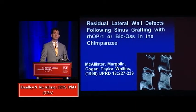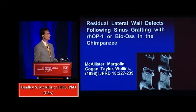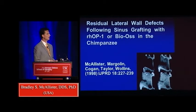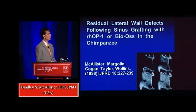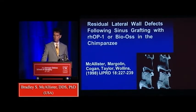One of the things we learned early on with the use of some of the bone morphogenetic proteins is that you did have to recruit the cells, and so the cells would be coming from the lateral wall. This shows a sinus augmentation and you can appreciate the upper left where we have no bone formation, and as you move around you'll see that the bone formation is coming from the walls because that's where the cells have been recruited from.